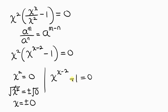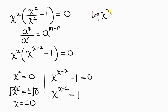For the second case, x^(x−2) minus 1 equals 0. Moving negative 1 to the right gives x^(x−2) equals 1. Since we have an unknown as the exponent, our next step is to take the log of both sides: log of x^(x−2) equals log 1.